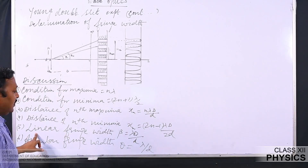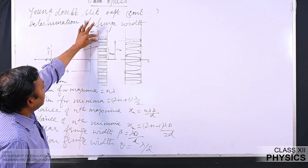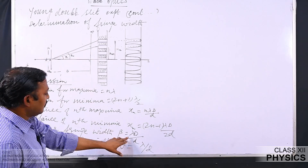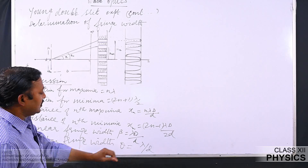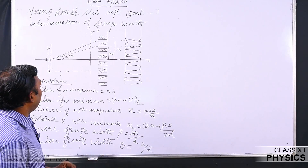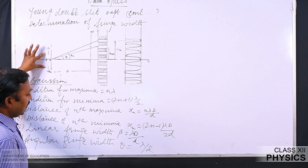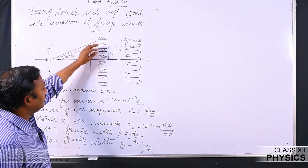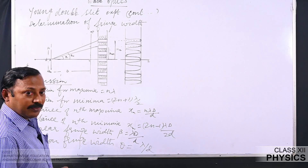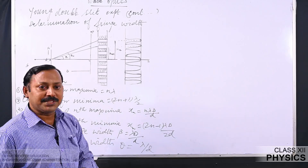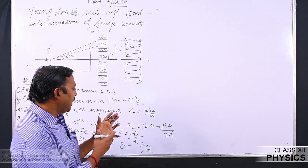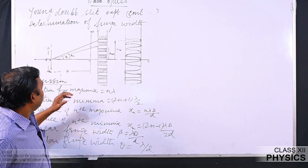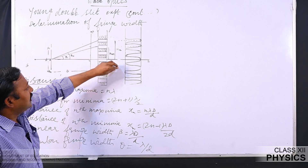The slit separation d should always be kept small. If d is large, the fringe width becomes smaller, all the fringes overlap, giving continuous illumination so we cannot distinguish bright and dark fringes. Two monochromatic coherent sources must be taken to produce interference. In Young's double slit experiment, dark fringes are completely dark and bright fringes are completely bright.